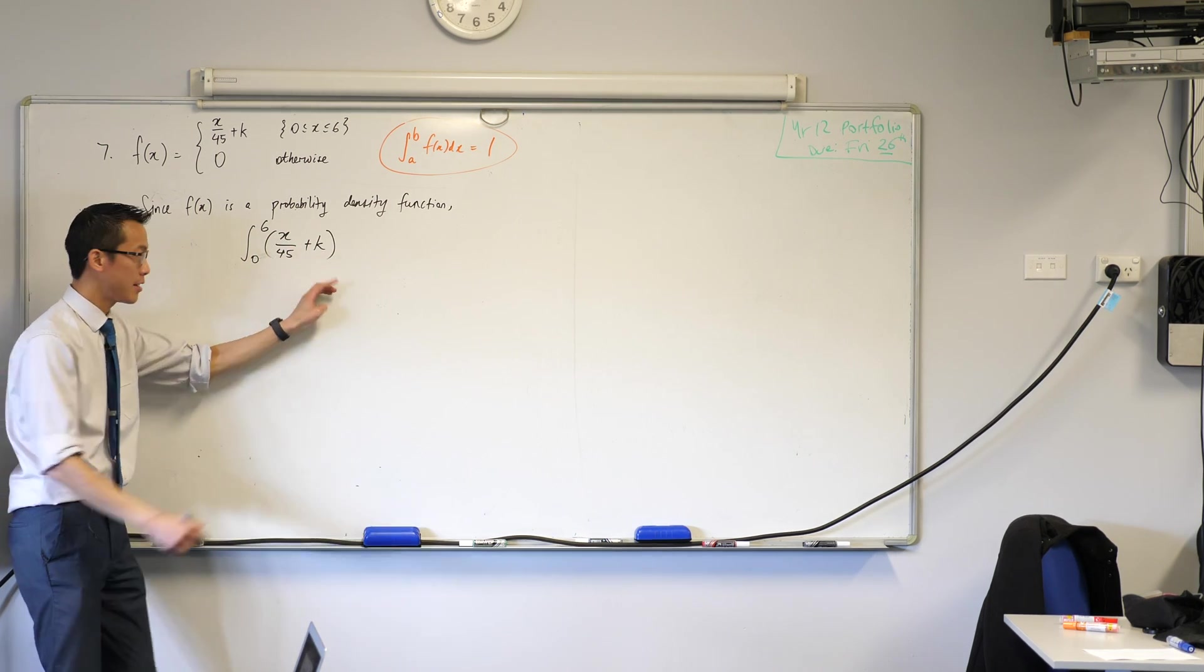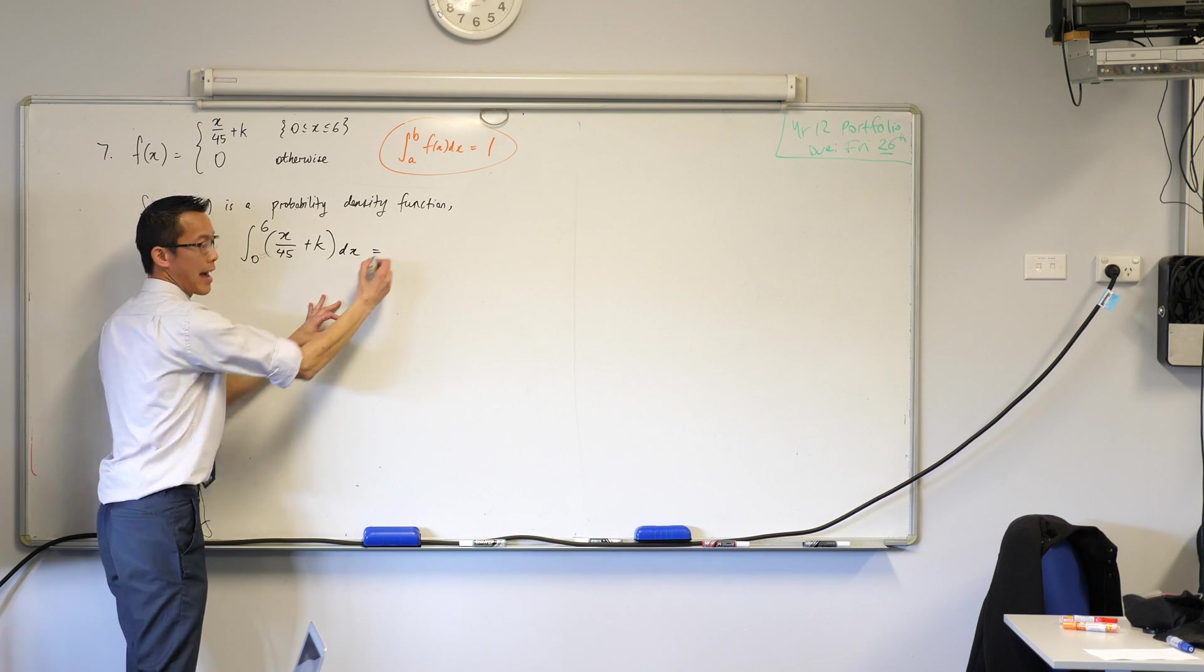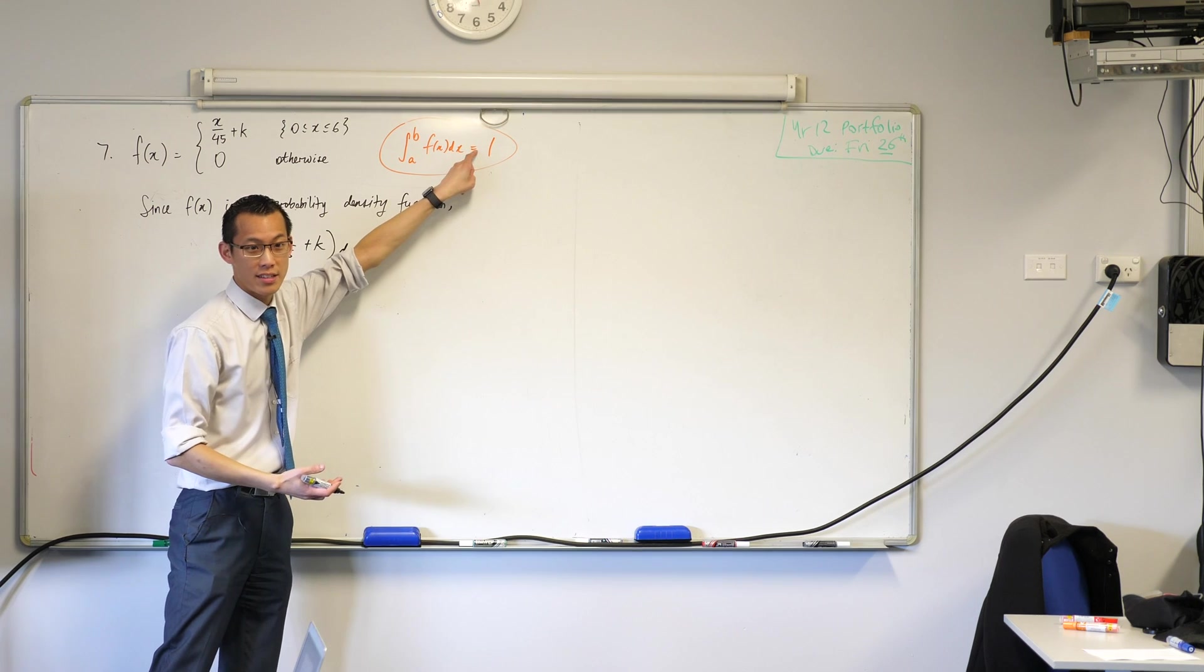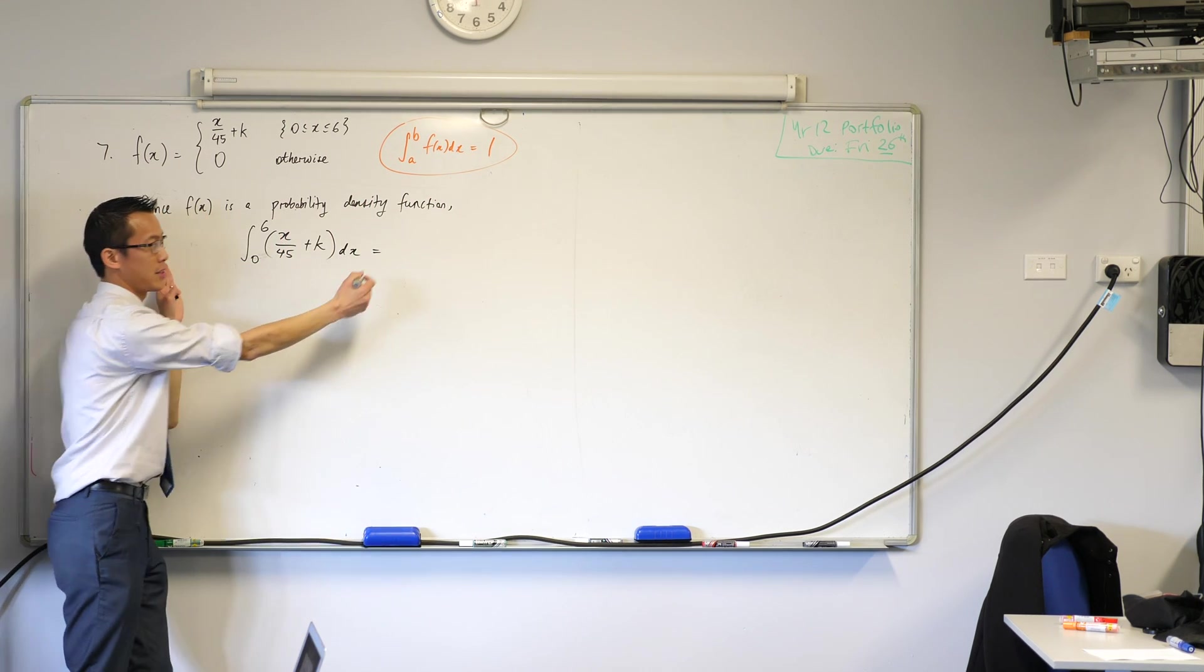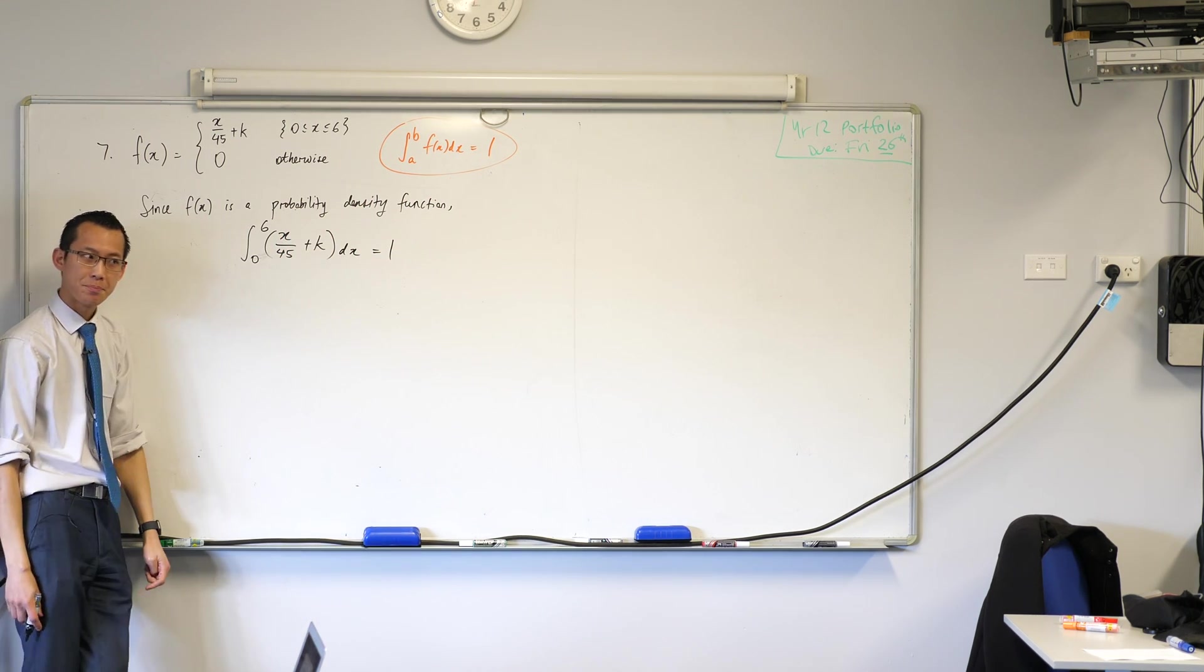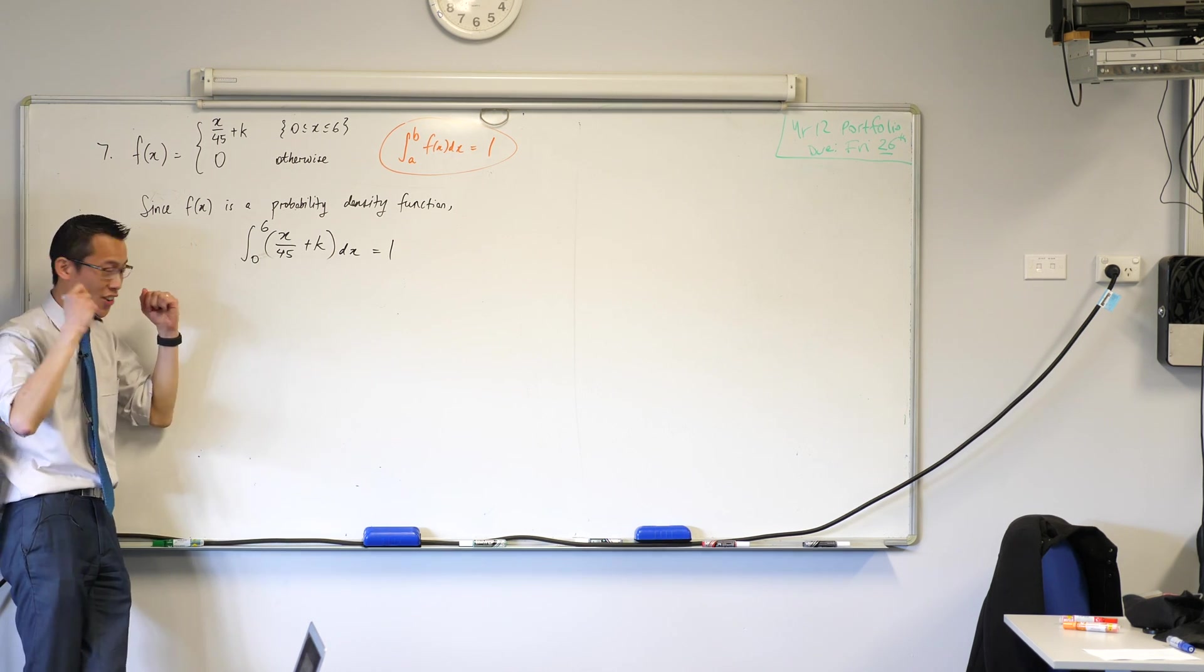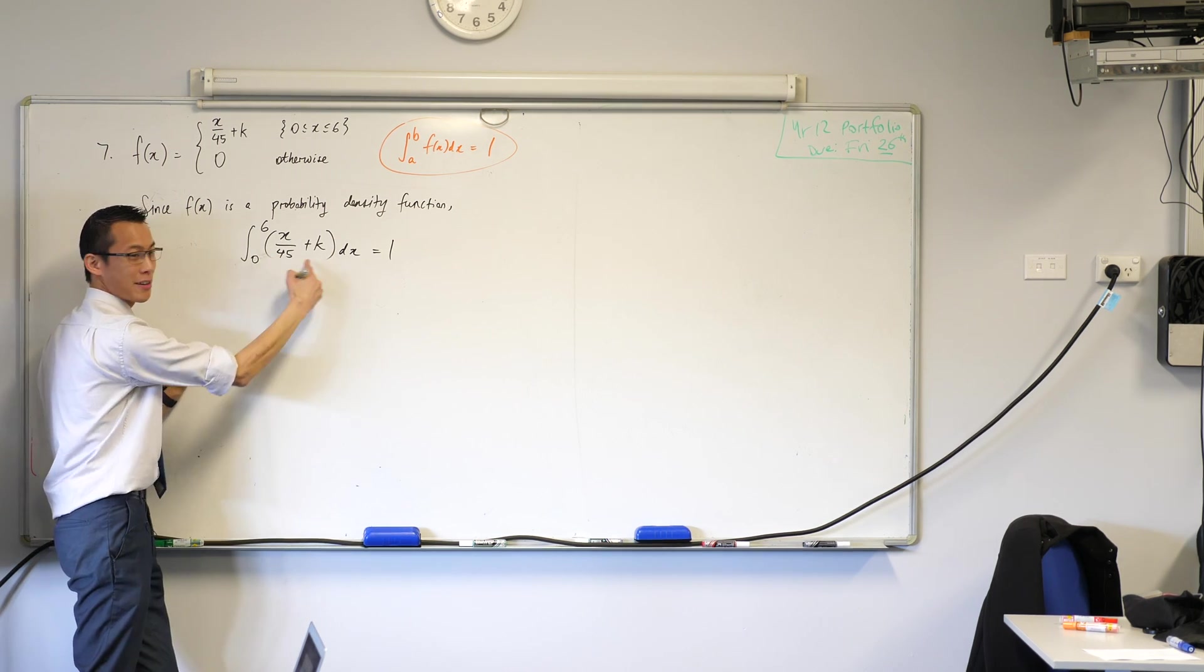So I'm going to take this, I'm going to integrate it with respect to x. And the thing is, I know what the answer to this question is, because it's a probability density function, all my probabilities ought to add to one. Now, at this point, I'm like, okay, calculus hat back on. I'm going to integrate this guy.